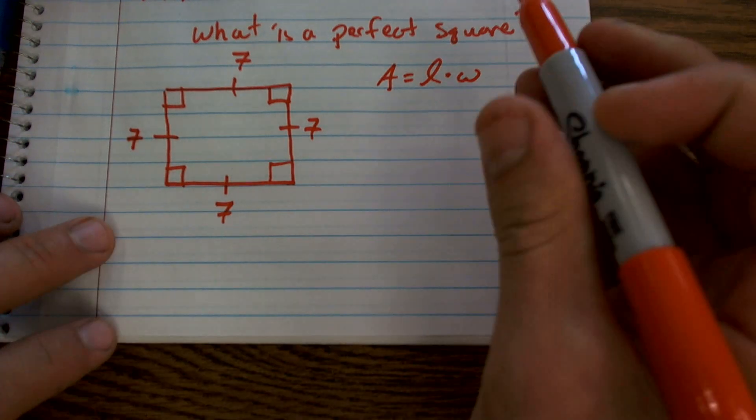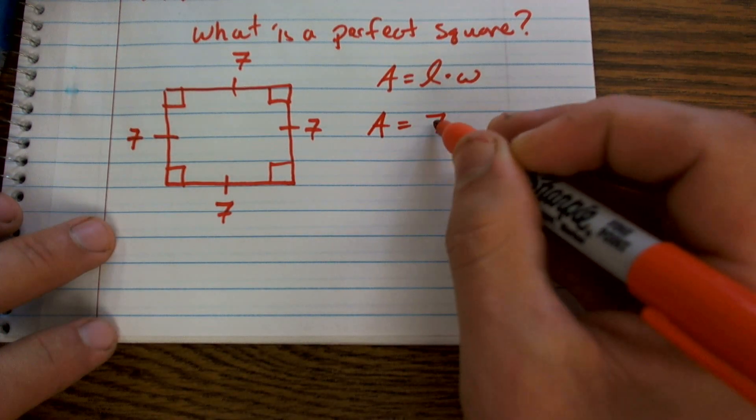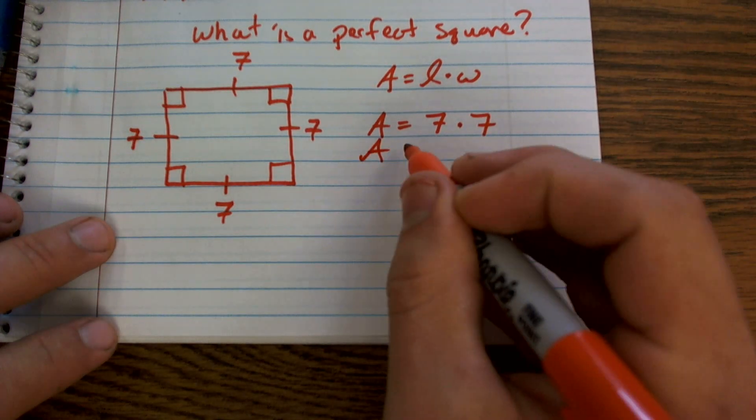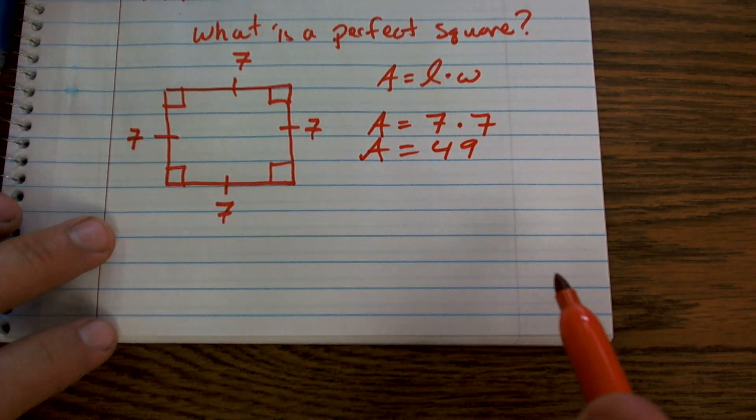But here, you're going to see that the area is going to equal seven times seven, which equals 49.